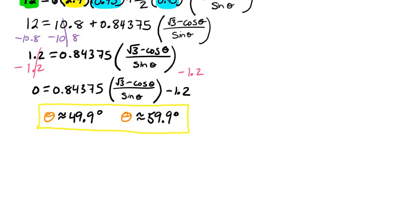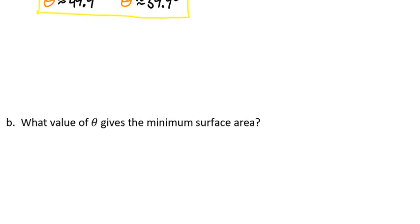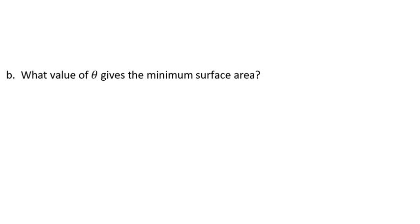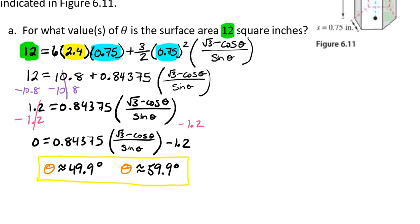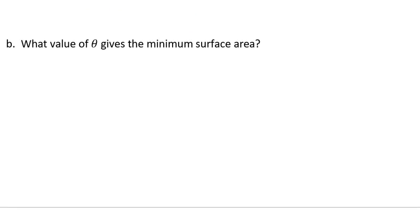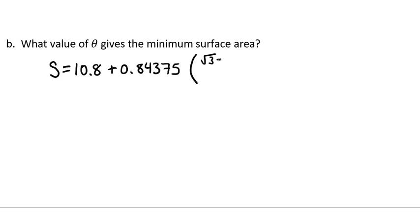Now suppose we want to know what value of theta gives the minimum surface area. Recall that the minimum of a function is its lowest point. We go back to our equation — the surface area equals 10.8 plus 0.84375 times the square root of 3 minus the cosine of theta over the sine of theta — and we're going to graph this.